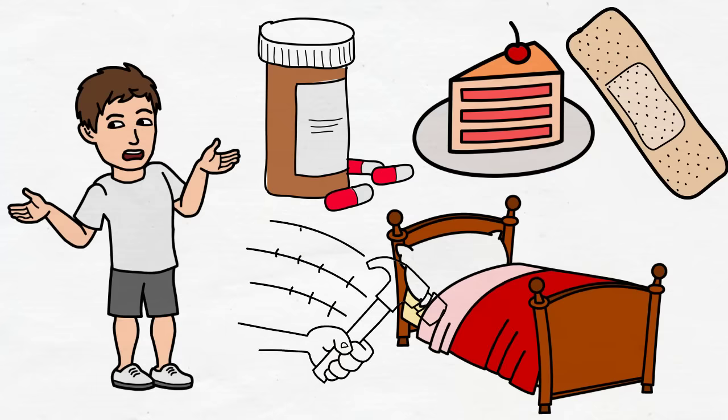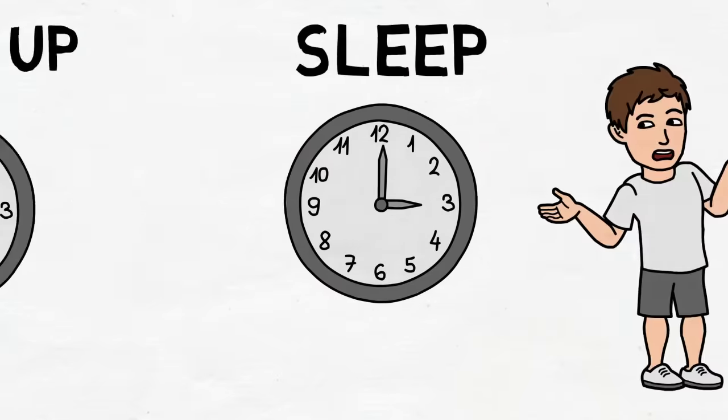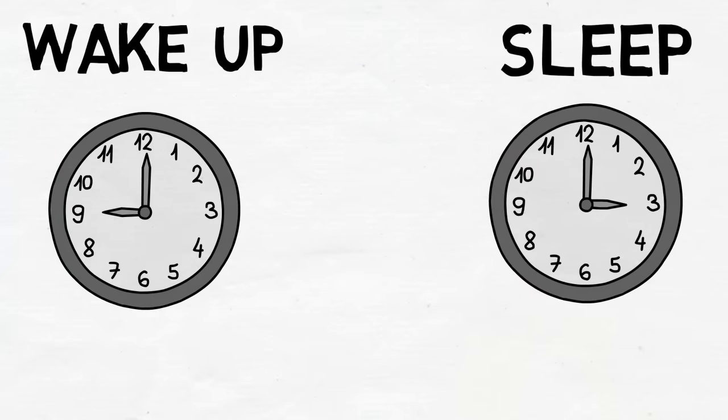Rather than pulling an all-nighter, Mike should focus on fixing his sleep habits. A much better approach for Mike would be to go to sleep earlier and wake up earlier. If he just moved his sleep schedule 15 minutes backwards every day, it would be a much better choice.